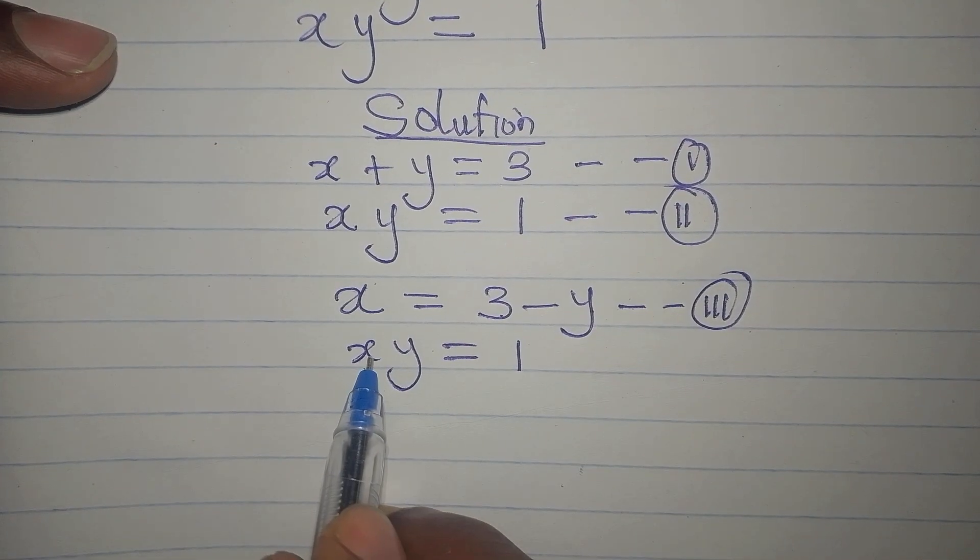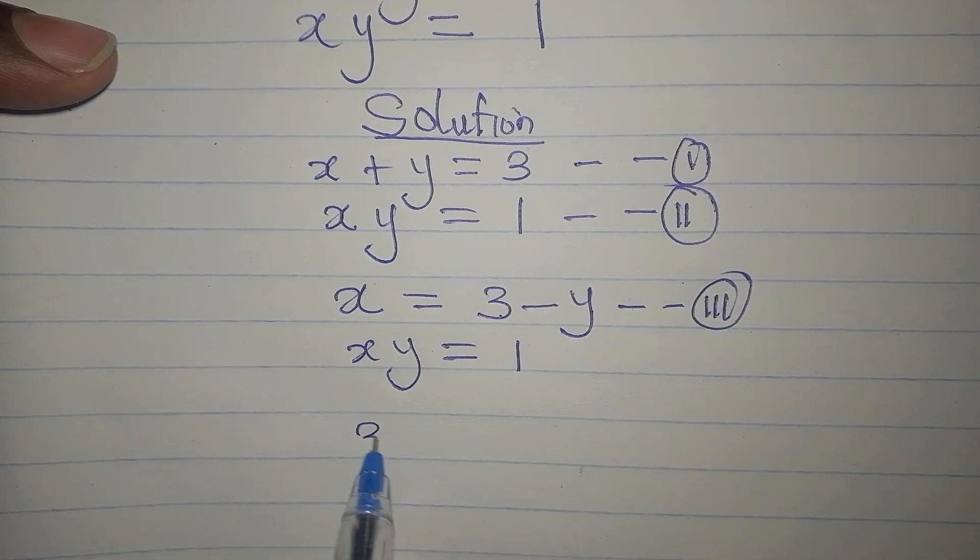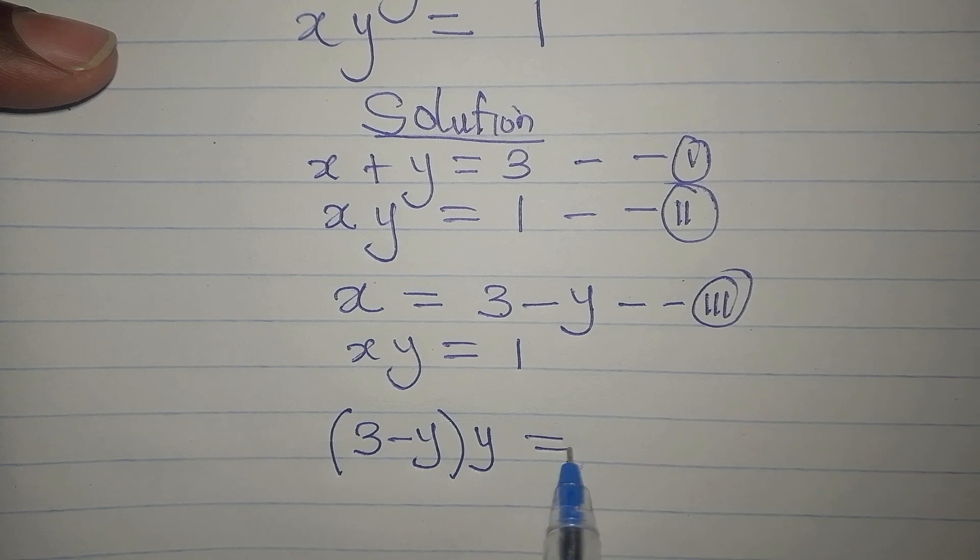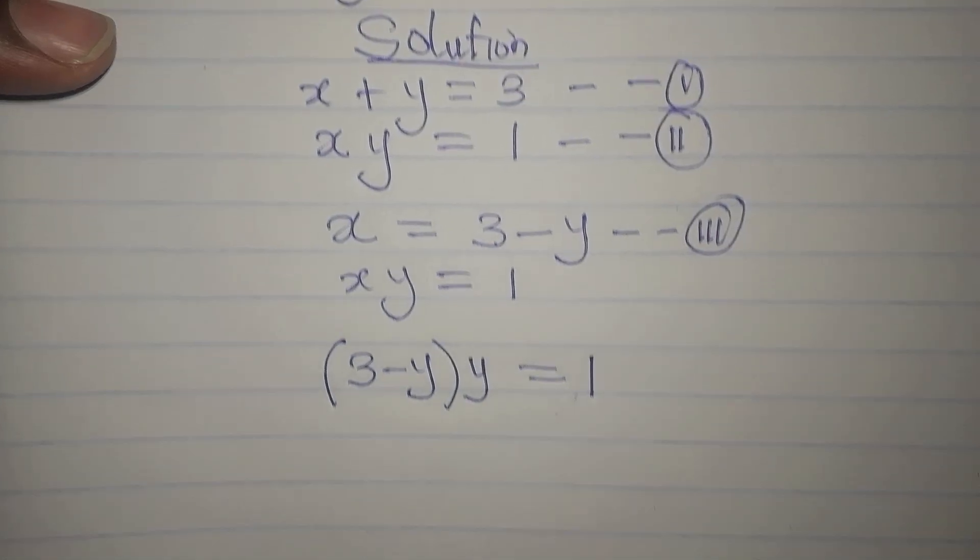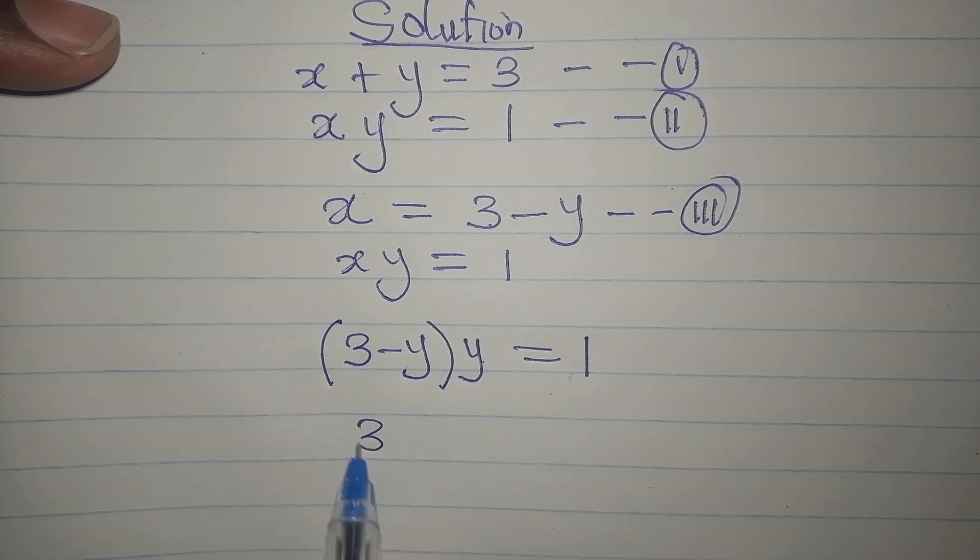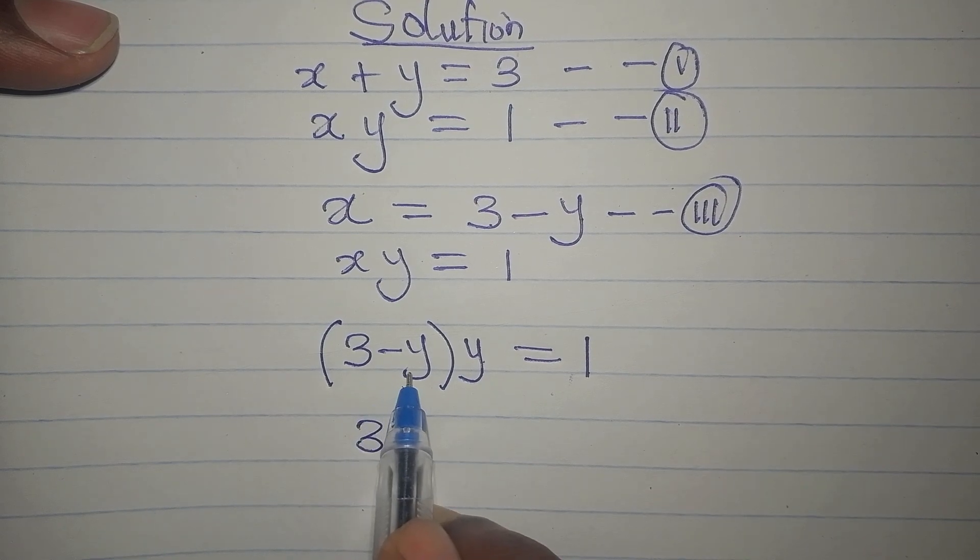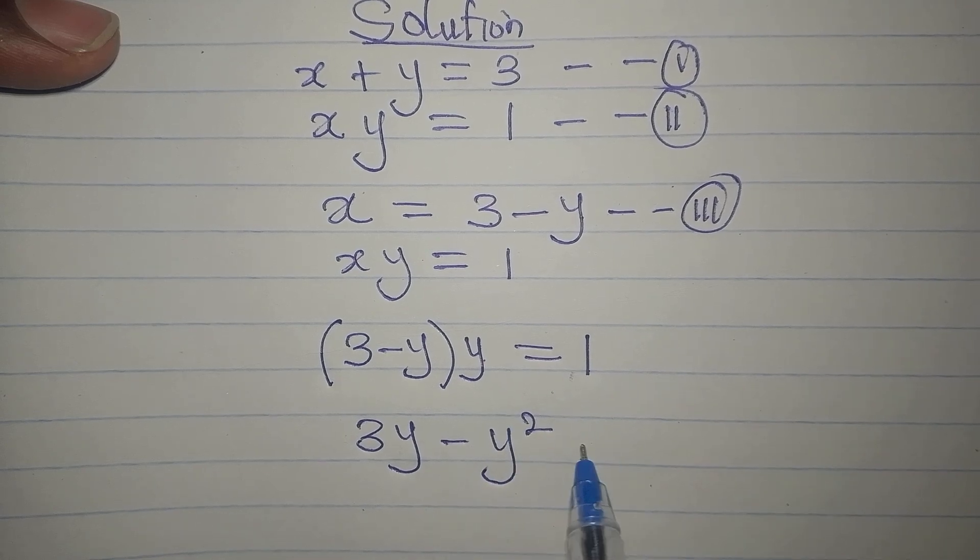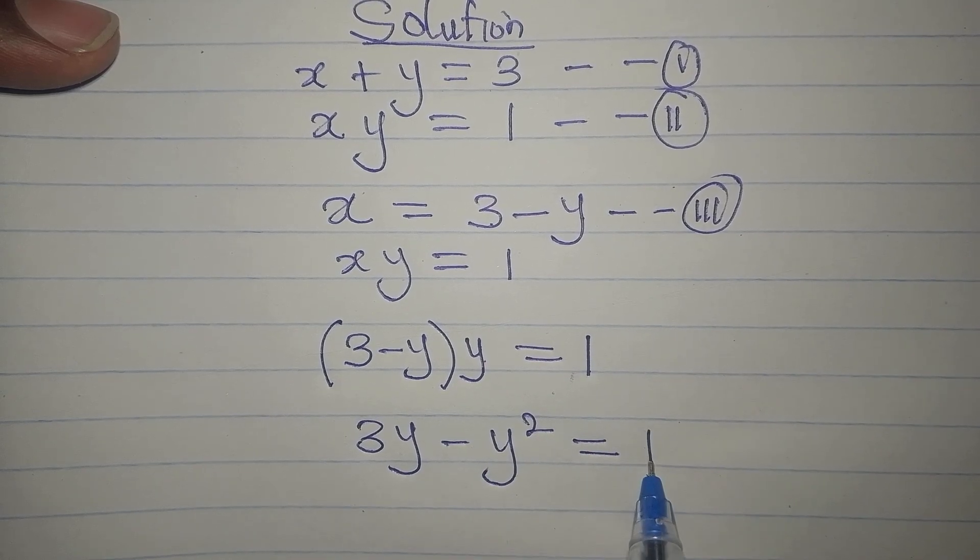Then this y will come down and the whole of this is equal to 1. If you open the bracket, 3 times y is 3y, then minus y times y is minus y squared and this is equal to 1.